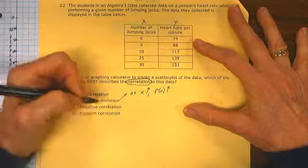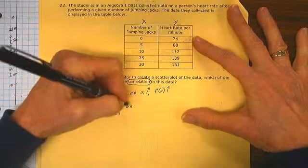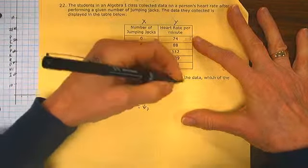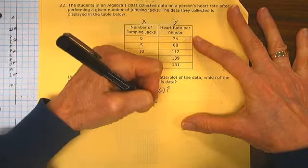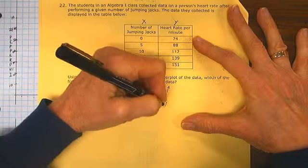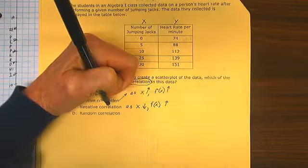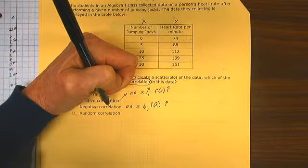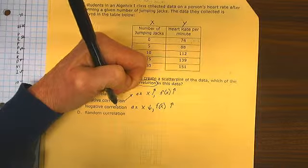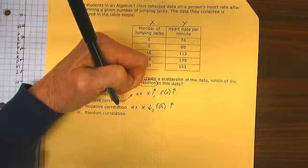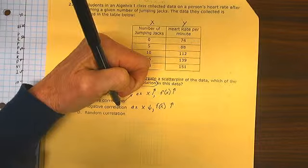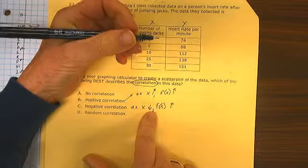Negative correlation says as your independent variable decreases, your dependent variable increases. An example of negative correlation would be something like the more time I play video games, the lower my grades get.